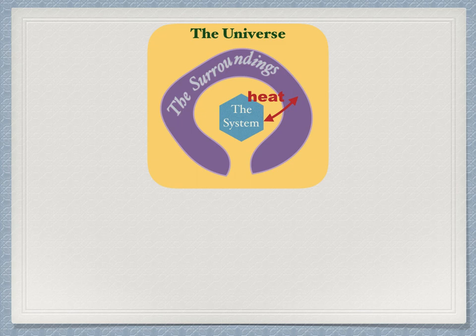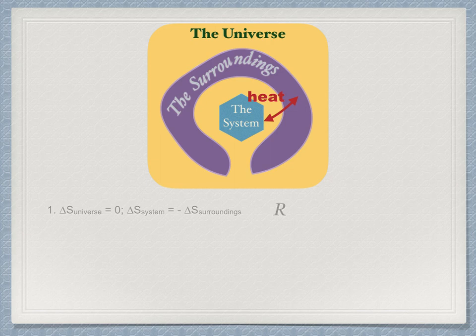Three situations can arise and need to be considered. First, ΔS universe equals zero because ΔS system exactly balances and counters ΔS surroundings. This only happens when a process occurs reversibly.